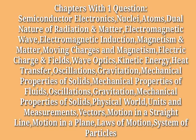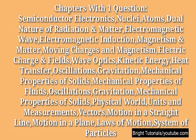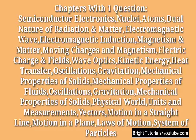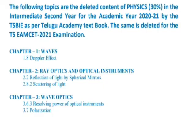The chapters with a minimum of one question in TSM SET 2021 are: semiconductor electronics, nuclei, atoms, dual nature of radiation and matter, and electromagnetic waves. All these chapters have a minimum one-mark weightage in TSM SET 2021.